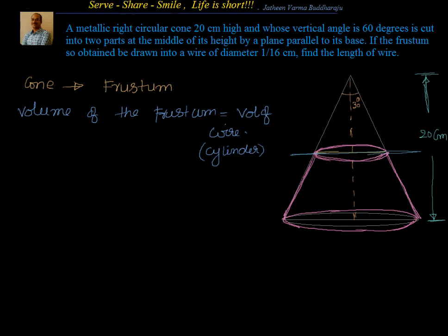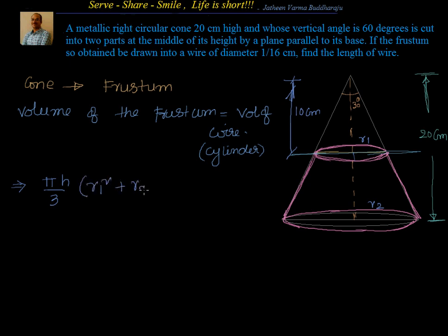So R1 is the top radius and R2 is the bottom radius of the frustum. We know that the height of the cut is 10 centimeter because we cut exactly at the middle of the 20 cm cone. So the height of the frustum is 10 centimeter. The volume of frustum formula is: pi × H/3 × (R1² + R2² + R1·R2). We know H = 10 centimeter.